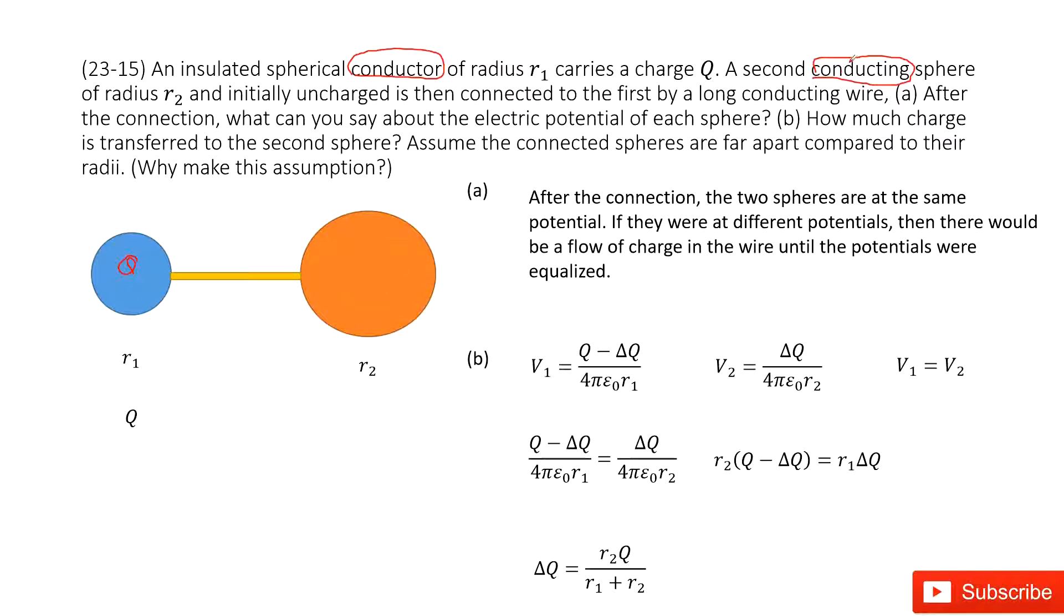Then we use one conducting wire - another keyword: conducting. That means the charge can move freely on it.